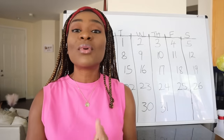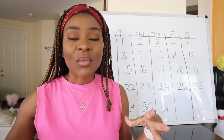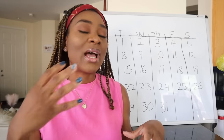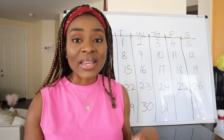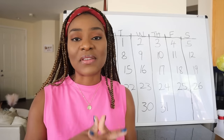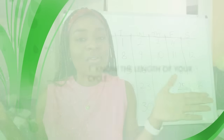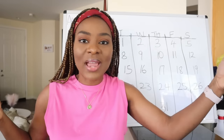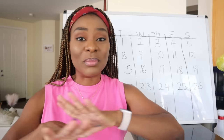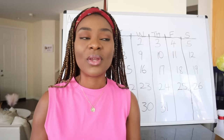If you are trying to conceive, the most important thing you want to know is your fertile window, because during your fertile window one of those days you are going to ovulate — an egg will be released, and if you have unprotected sex the egg can get fertilized and you can conceive. To know your fertile window, the first thing you need to know is the length of your cycle — not the number of days you bleed, but from the first day you see your period to the day before your next period.